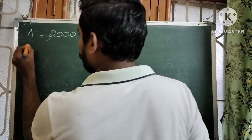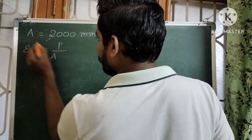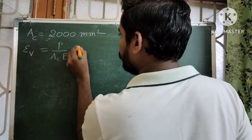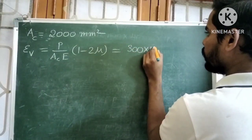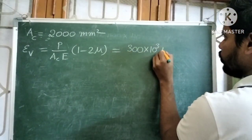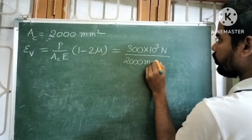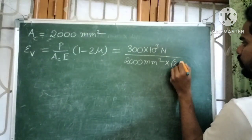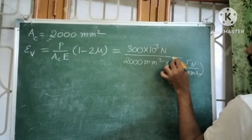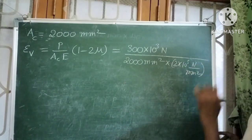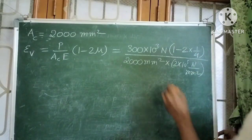Now volumetric strain εᵥ = P / (AC × E) × (1 − 2μ). Substituting: load = 300 kilo Newton = 300 × 10³ N, area = 2000 mm², Young's modulus E = 2 × 10⁵ N/mm², and (1 − 2 × 1/4) = (1 − 1/2) = 1/2. Units of Newton and mm² cancel, so volumetric strain is dimensionless.